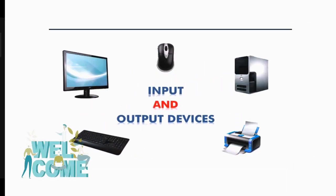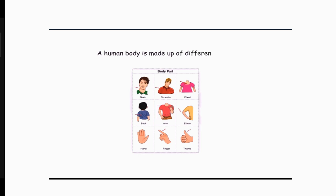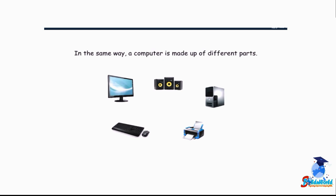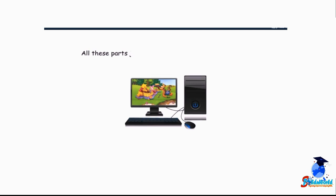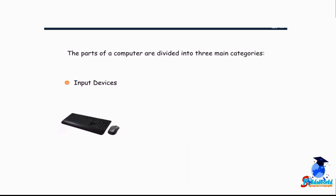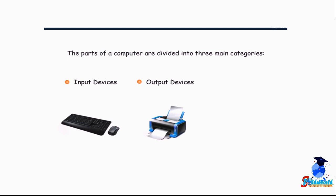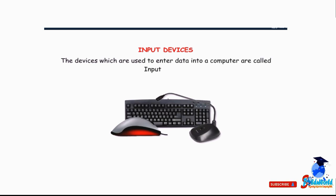Today we will learn about input and output devices. Just as a human body is made up of different parts each with a special function, a computer is also made up of different parts that join together to make it work. The parts of a computer are divided into three main categories: Input devices, Output devices, and Storage devices.